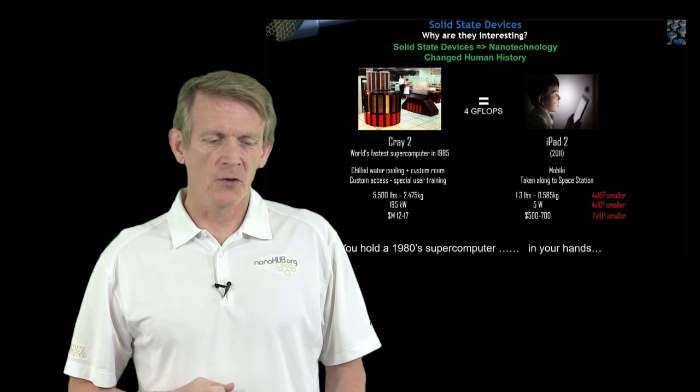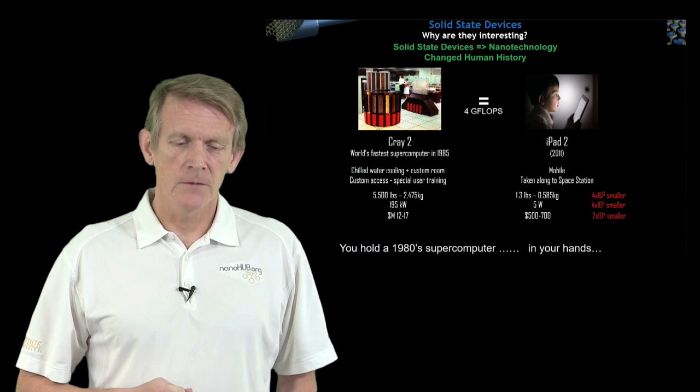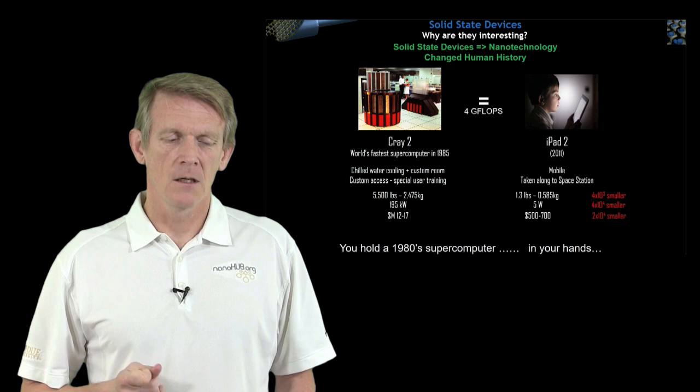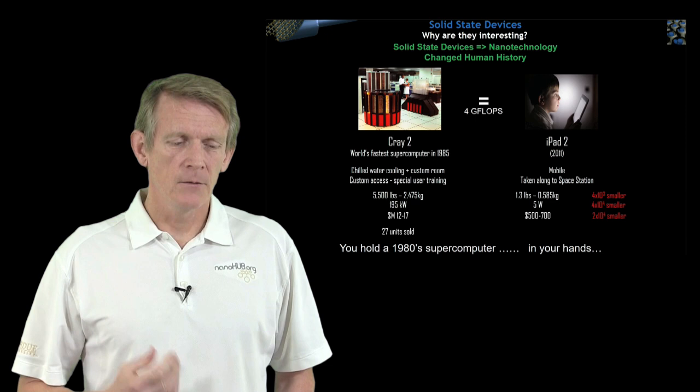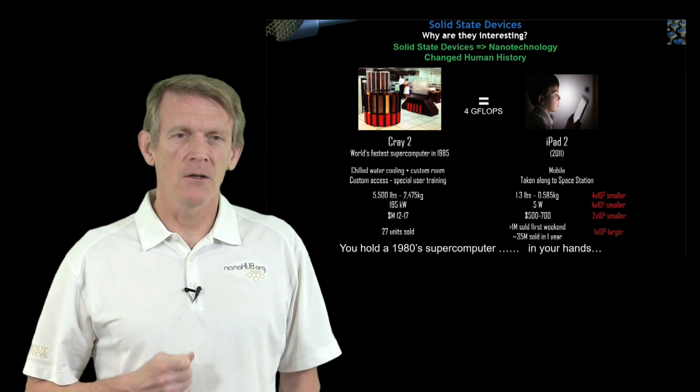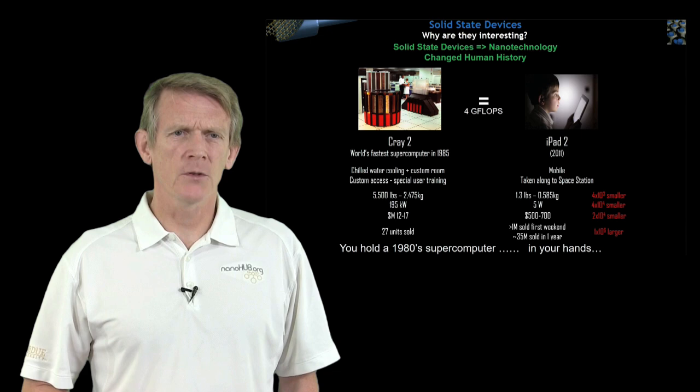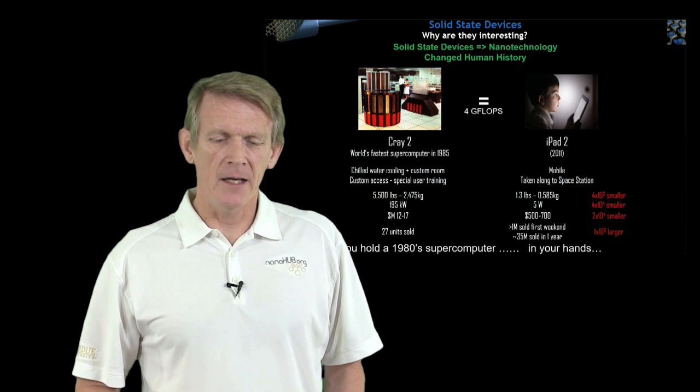Another comparison is the price point. These Crays came in at 12 to 17 million dollars. An iPad at the time was about 20,000 times cheaper at 500 to 700 dollars. Let's look at the number of devices being sold. Cray 2 sold 27 units. The iPad sold a million on the first weekend when it came on the market, and overall about 35 million were sold in a single year. So the advancements are just dramatic.